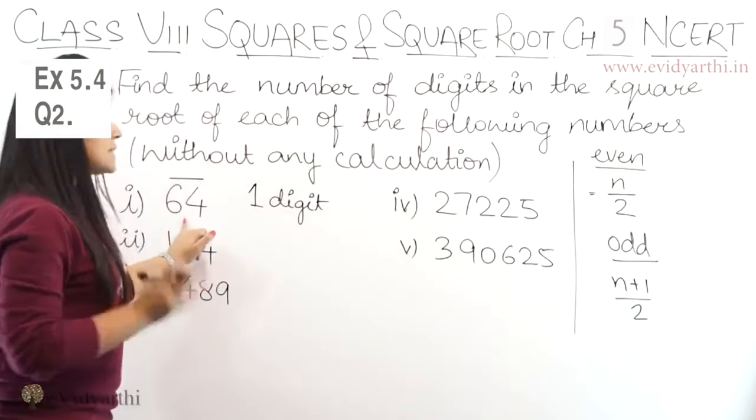Now the last part mein. Again 1, 2, 3. So yeh kitne digits ka hai. 3 digits ka. And agar check karo. 1, 2, 3, 4, 5, 6. 6 digits. Means 6 upon 2. Which will again be 3. So isko guess karne ke sabse easy way hai. Bars laga ke dekh lo. Right side se pairs banao. Otherwise agar even digits hain to n upon 2. Aur agar odd hain to n plus 1 upon 2.